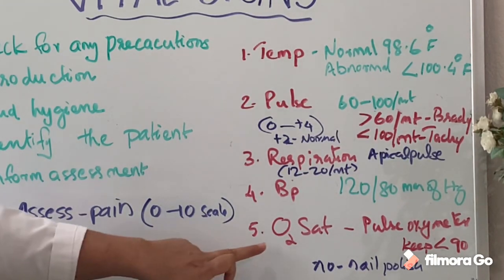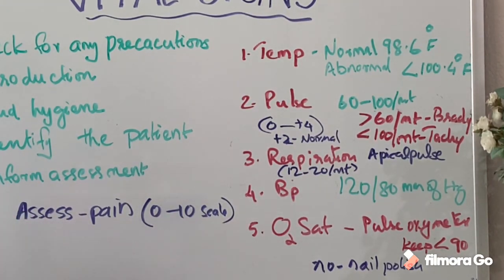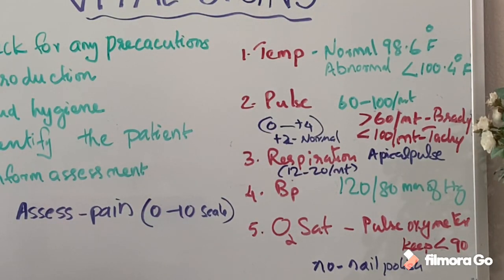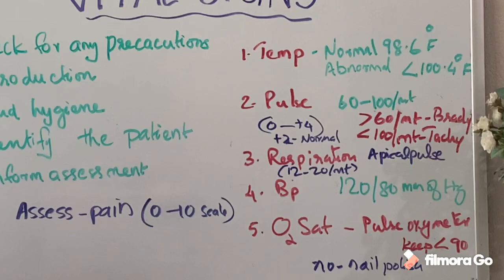Oxygen saturation is checked with a pulse oximeter placed on the finger. Make sure there is no nail polish on the finger. Normal reading is greater than 90%. Anything less than 90% is a medical emergency and must be addressed immediately.